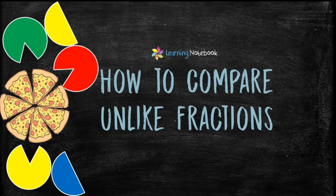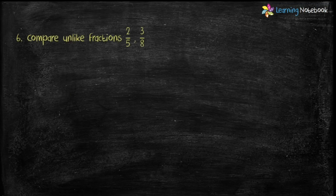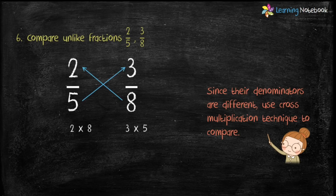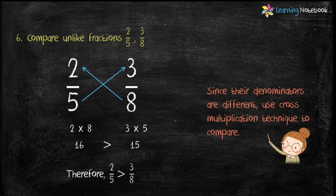Now let's understand how to compare unlike Fractions. Question: compare unlike Fractions 2 by 5 and 3 by 8. Since the denominators are different, we will use cross multiplication technique to compare these Fractions. We will do 2 into 8 and 3 into 5. 2 into 8 equals 16 and 3 into 5 equals 15. Since 16 is greater than 15, therefore Fraction 2 by 5 is greater than Fraction 3 by 8.